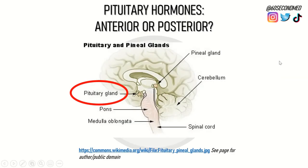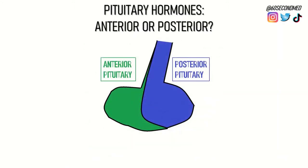The pituitary gland is an endocrine gland that sits in the brain and secretes a lot of important hormones. It can be split into the anterior part and the posterior part, and each part secretes a different set of hormones.